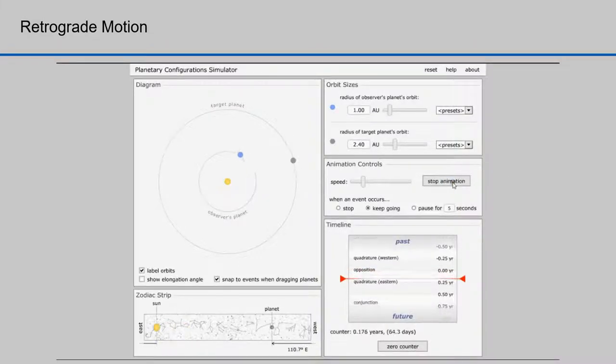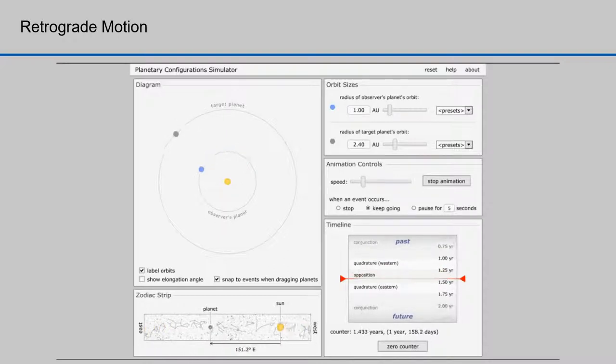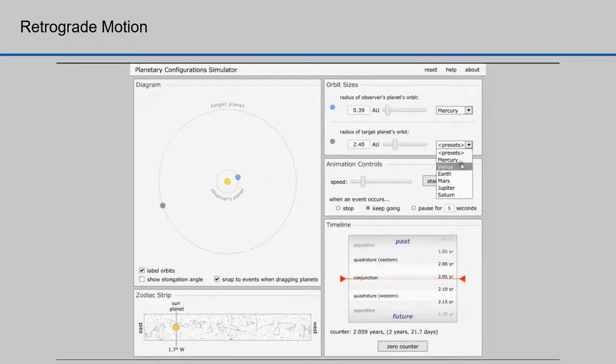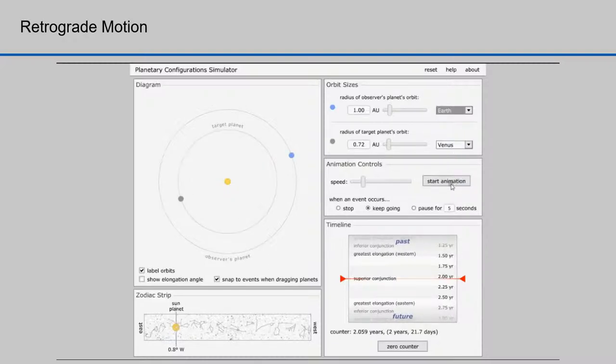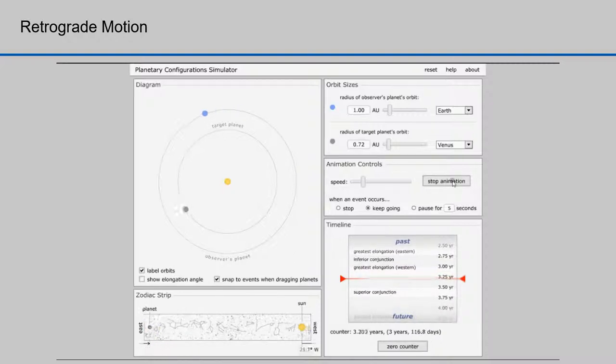Copernicus explained the back-and-forth motion of the planets by putting the Earth in an interior orbit and another planet in an outer orbit like I'm showing in this animation. If you look closely at the gray planet on the zodiac strip at the bottom of this animation, you can see the back-and-forth motion. If we make the Earth an outer planet and the gray one an inner planet like Earth and Venus, you'll see this back-and-forth motion as well. This is a much more intuitive explanation of the relative motions of the planets. The motions were now much simpler and much more intuitive.